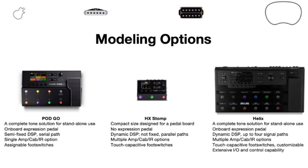Finally, we have the big granddaddy Helix — five years old now, still adding new updates and awesome new features all the time. It's a complete tone solution for standalone use with an onboard expression pedal, dynamic DSP with four signal paths, so you can easily run multiple amps, cabs, effects, crazy long signal chains with parallel routings. It also has those touch capacitive foot switches with customizable scribble strips — individual screens over each foot switch, really awesome on stage. And it has extensive I/O and control capability: two quarter-inch outs, an XLR, a whole host of digital I/O, and four sends and returns, meaning that Helix plays extremely well with any of your analog gear.